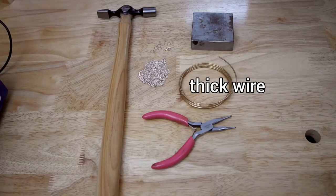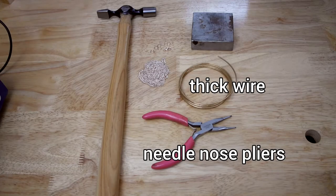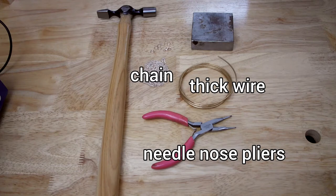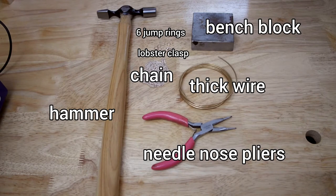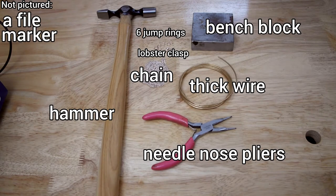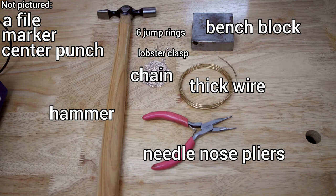You'll need thick wire, needle nose pliers, chain, six matching jump rings and one lobster clasp, a hammer, a bench block, a file, marker, center punch, and a dremel tool.